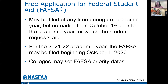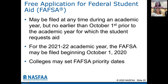The form may be filed at any time during an academic year, but no earlier than October 1st prior to the academic year for which the student is requesting aid. So this October 1st, the FAFSA became available for the 21-22 academic year, and you will be using tax returns from 2019 to complete the FAFSA. Colleges may also set their own FAFSA priority deadline dates, so double check with all of the schools to make sure you're filing the FAFSA when they need it done.